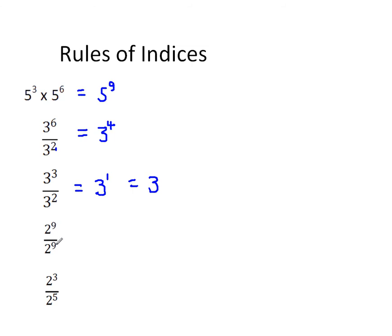When you take a number and divide it by itself — 7 divided by 7 is 1, 52 divided by 52 is 1 — so 2 to the power 9 divided by 2 to the power 9 must be 1. But using our rule of indices, subtracting the indices gives 9 take away 9 equals 0, so it should be 2 to the power 0. Since anything divided by itself is 1, this means anything to the power 0 is 1. Note that 0 to the power 0 is undefined — we must never use it.